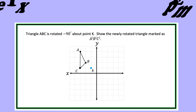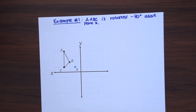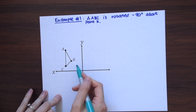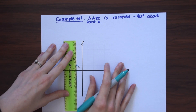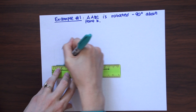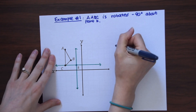Now let's look at our first example. Triangle ABC is rotated -90 degrees about point K. We need to show the newly rotated triangle marked as A prime, B prime, C prime. The first thing to notice is that we are not rotating about the origin — this is a little different. So the first thing I like to do is draw a new axis originating from our new point of rotation, point K, to use as our new X and Y axis for this problem.